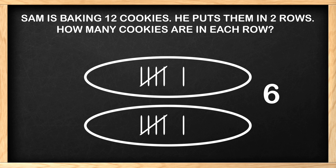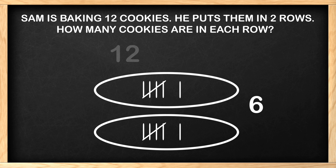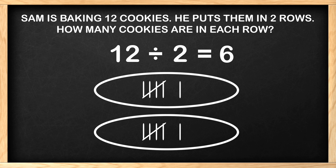Great job! We solved the problem by just using the drawing. Let's write the equation that goes along with it. We started with twelve cookies, and we essentially divided them into two. Our equation is twelve cookies divided by two equals six. Great job, guys! That was amazing!